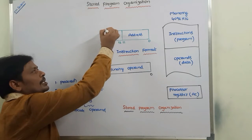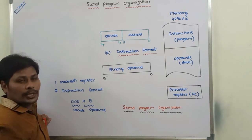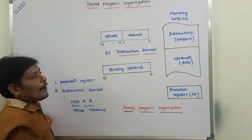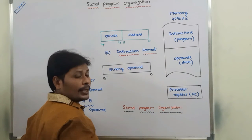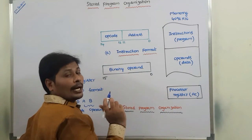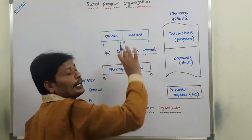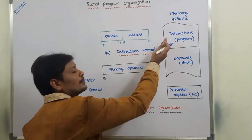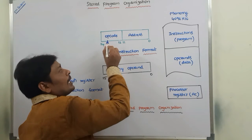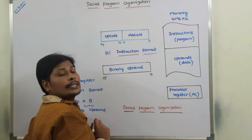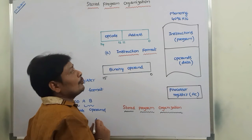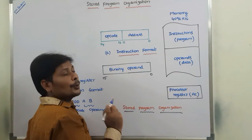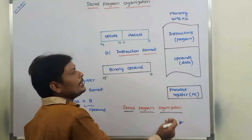Whatever the operation that is specified in the opcode part of the instruction format, we require operands. These operands are stored in the memory or a processor register at a particular address, and those addresses are specified in the address part of the instruction. Once we are fetching the operands either from the memory or from the processor register, the specified operation is performed on the operands and we get the result. That result is stored either in the memory unit or in the processor register.